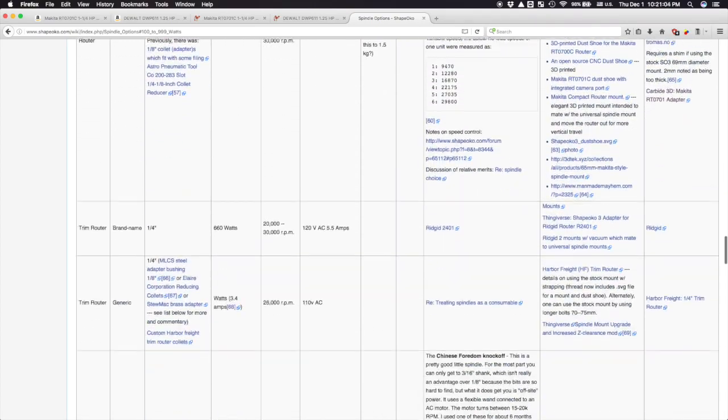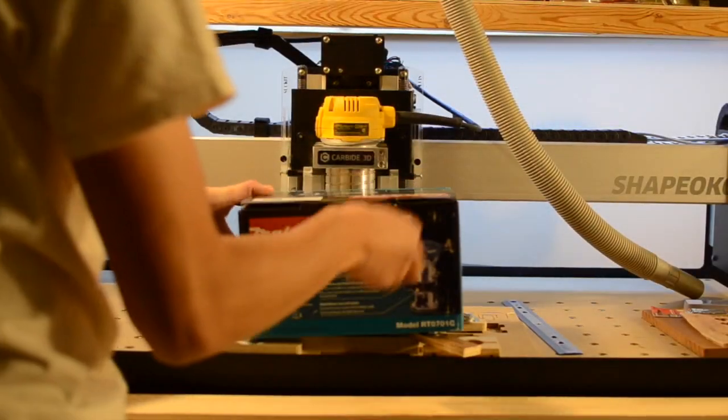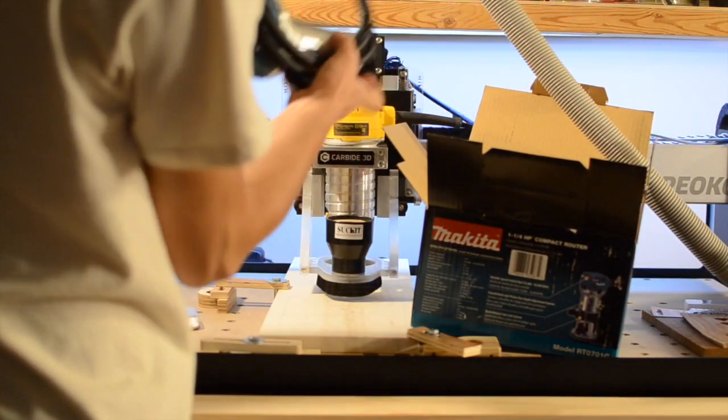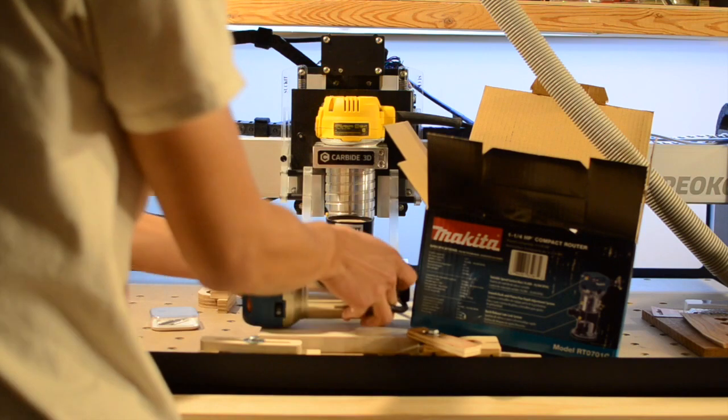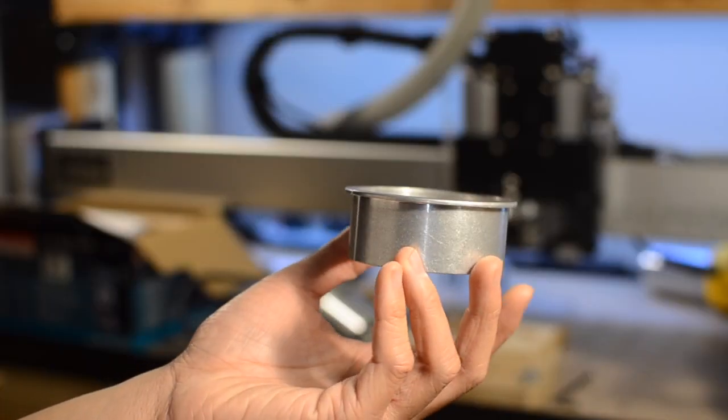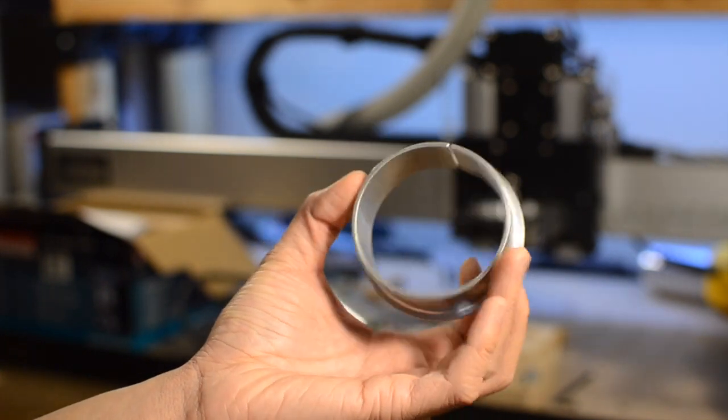One popular alternative in the CNC community is the Makita RT0701. Unfortunately, you can't just drop a Makita into the Shapeoko 3 because it's a few millimeters skinnier than the DEWALT. You need a reduction bushing to make it fit, like this one that Carbide3D recently made available and which Edward Ford sent me.